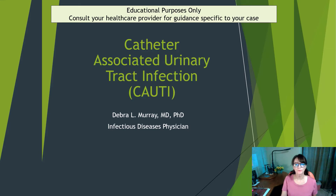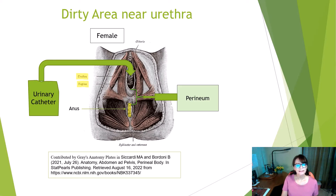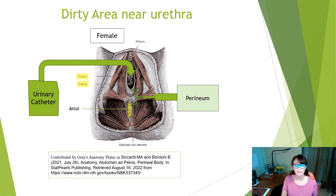Throughout this presentation I'll often abbreviate catheter associated urinary tract infection as CAUTI. Let's get down to the dirty part of it. Here's the urethra, and you can see where the catheter inserts. As we talked about on UTIs in general, the urethra is somewhat of a dirty area — it's close to the anus, and this perineal area often gets contaminated with bacteria from feces.